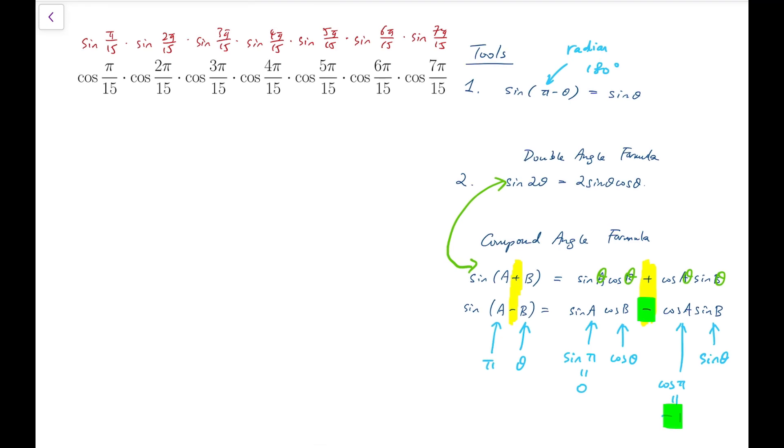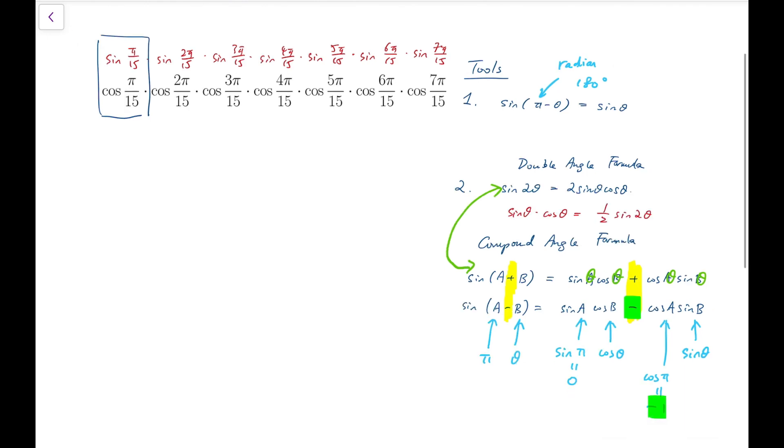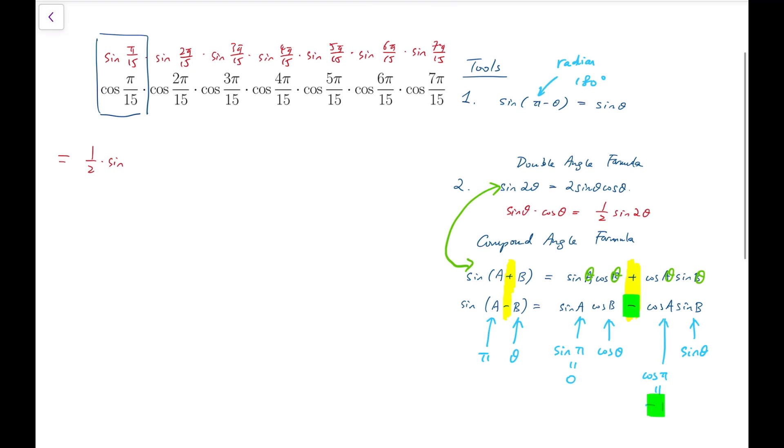I'm going to treat them group by group, pair by pair. The first pair is the product of sine and cosine, and from the double angle formula, I can rewrite that as sine theta times cos theta equals half of sine 2 theta. So this equals to half of sine of the double angle, which is 2 pi over 15, and I can do the same for the next pair.